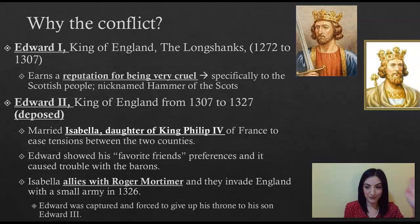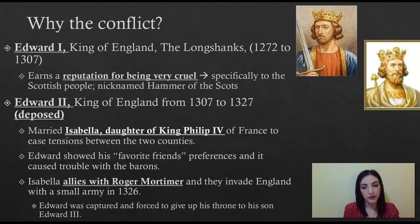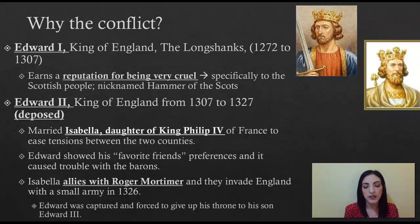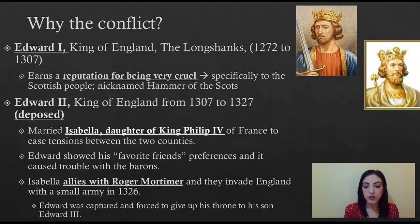We have to figure out why these two families were at war and how we eventually get to Henry VIII, who is going to be the monarch that completely changes the church in England. For generations, these two families were fighting each other for legitimate claims to the English throne. You have the Yorks represented by the White Rose and the Lancasters represented by the Red Rose. The conflict starts far back — the class period covers roughly around 1200. In England you have King Edward I, also nicknamed Edward the Longshanks, who earned a reputation for being very, very cruel, especially to the Scottish people. He was given the nickname Hammer of the Scots.